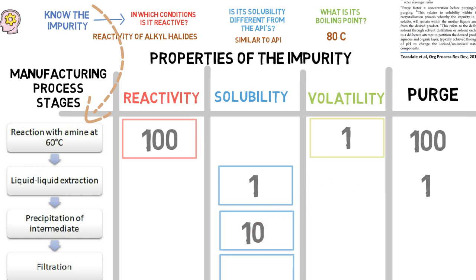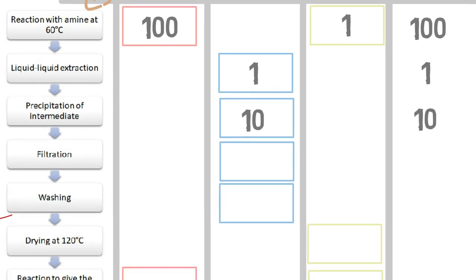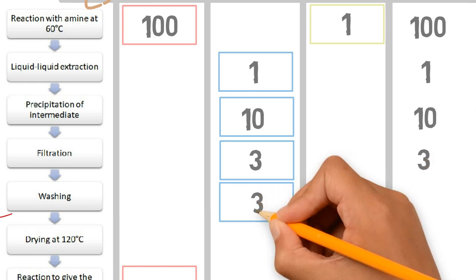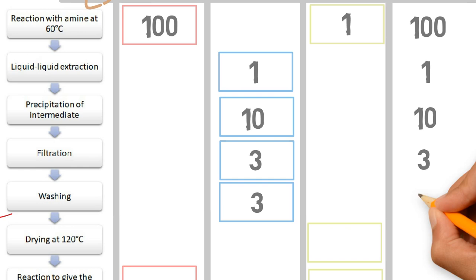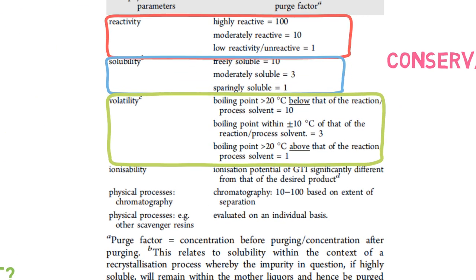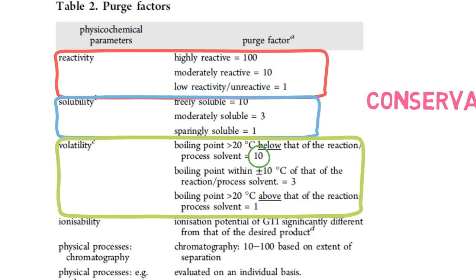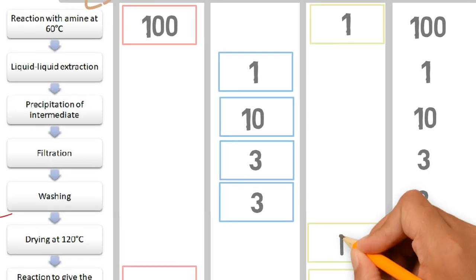In the filtration stage, the same reason described above applies, but as a conservative approach, the solubility factor is given as 3 instead of 10. For washing, the same applies, and the solubility factor is given as 3. In the drying stage, at 120 degrees, a volatility factor of 10 is given, because the temperature is more than 20 degrees higher than the boiling point of the impurity.